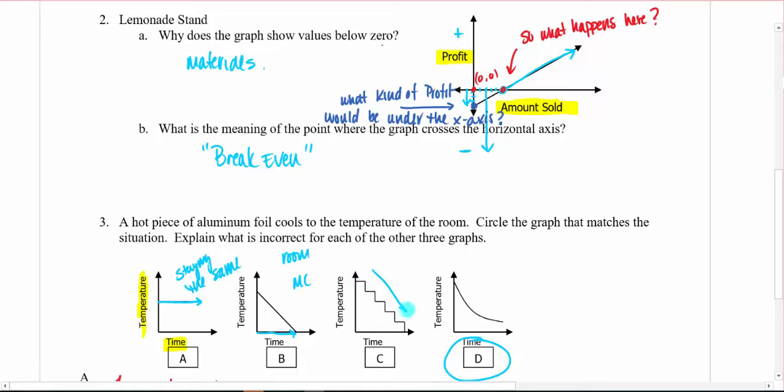You have sold the amount of lemonade in this case, and you've made enough money to cover everything that you spent to get started. So everything that you make past that point is profit. That's actual money that you get to keep that's a benefit to what you did, right? So that would be the break-even point. So let's take a look at one more before we move on to the next part here. So it says, a hot piece of aluminum foil cools to a temperature of the room. So circle the graph that matches the situation. Explain what is incorrect for each of the other three graphs. So hopefully you've already had this done. We're going to go ahead and take a look. It should be B. That's what you should have come up with.